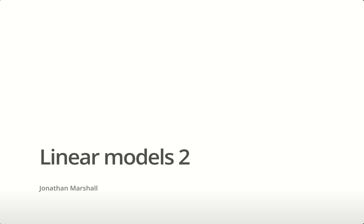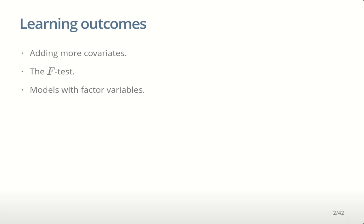Welcome to lecture eight for biostatistics. Today we're learning about extending the linear model past just one explanatory variable to multiple explanatory variables. We'll look at how we can test whether those multiple explanatory variables are important or not with the F-test, and then we'll move on to look at how we can incorporate categorical variables — qualitative variables — into our predictions.